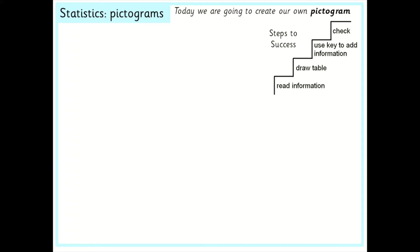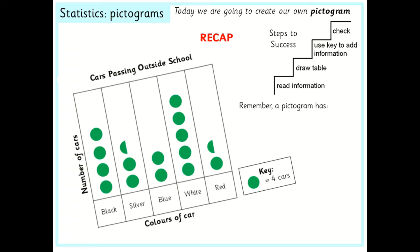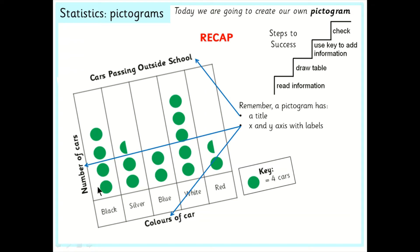Before we get started, let's just recap what we've learnt so far this week. Your pictogram needs to have a title — it tells you what your pictogram is actually about. It also has an x-axis along the bottom and a y-axis going up, and they have labels that give you information. Very importantly, it needs to have a key, because the pictures on your pictogram might not be one picture for one digit. This one represents four, so each circle is four and you'd count in fours to work out the right answer.